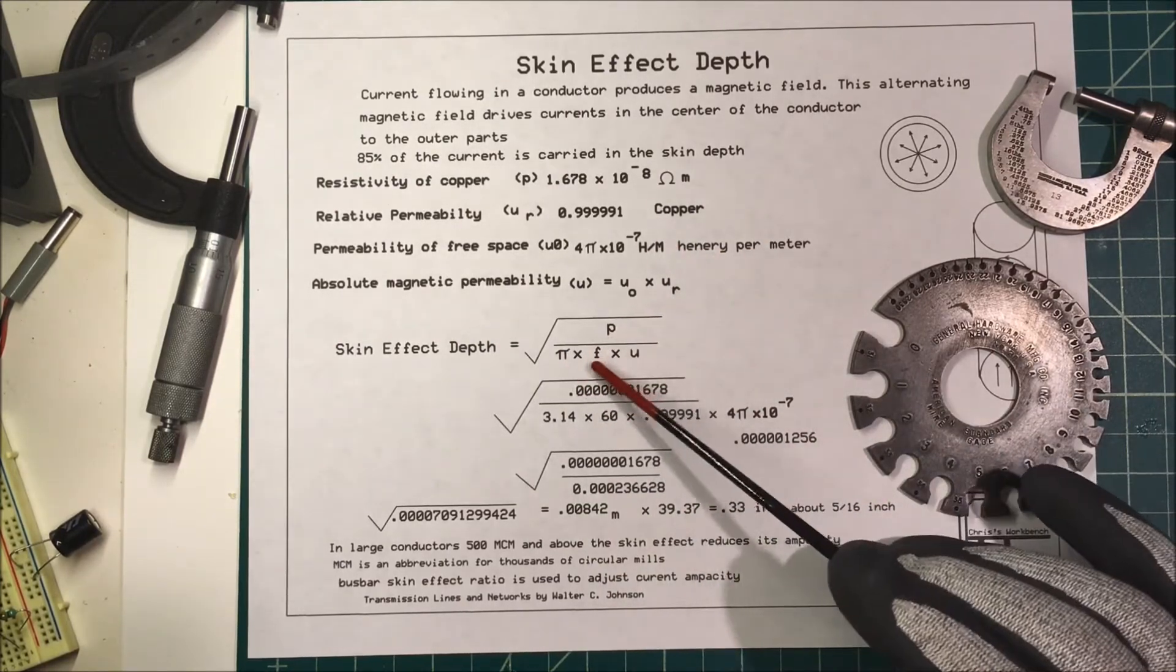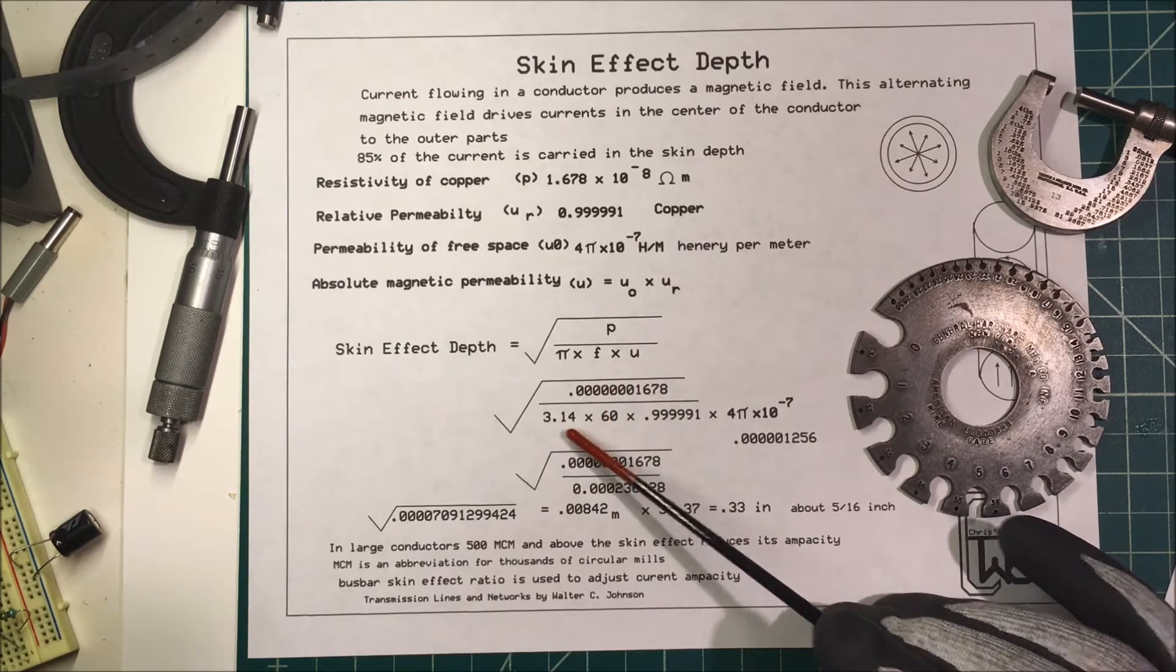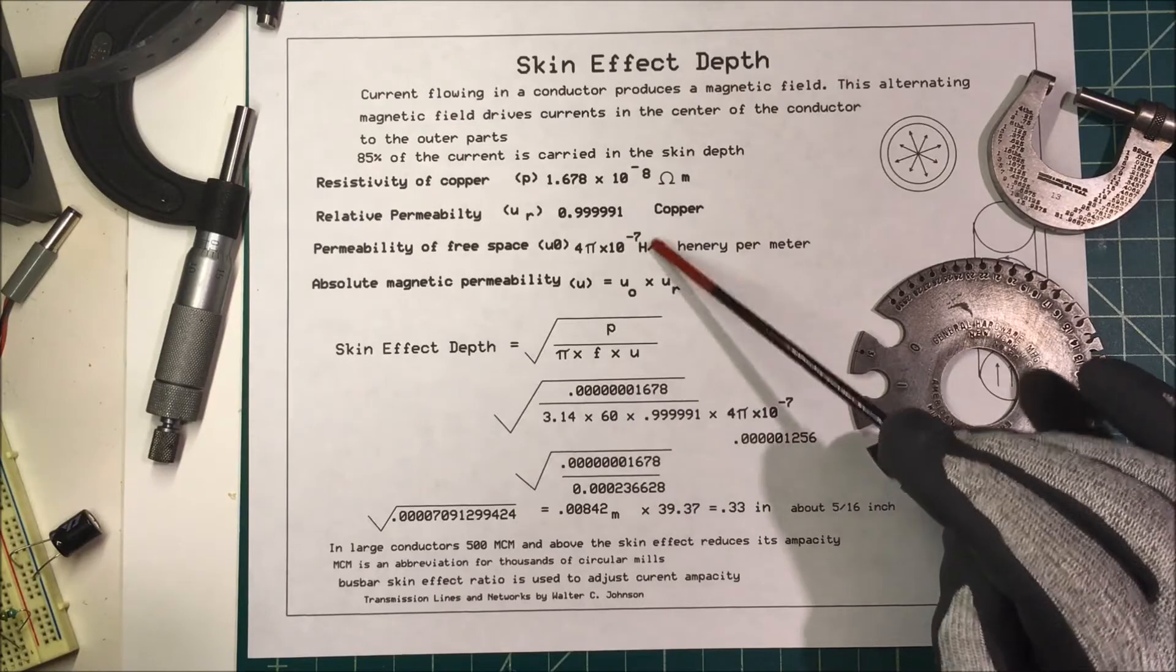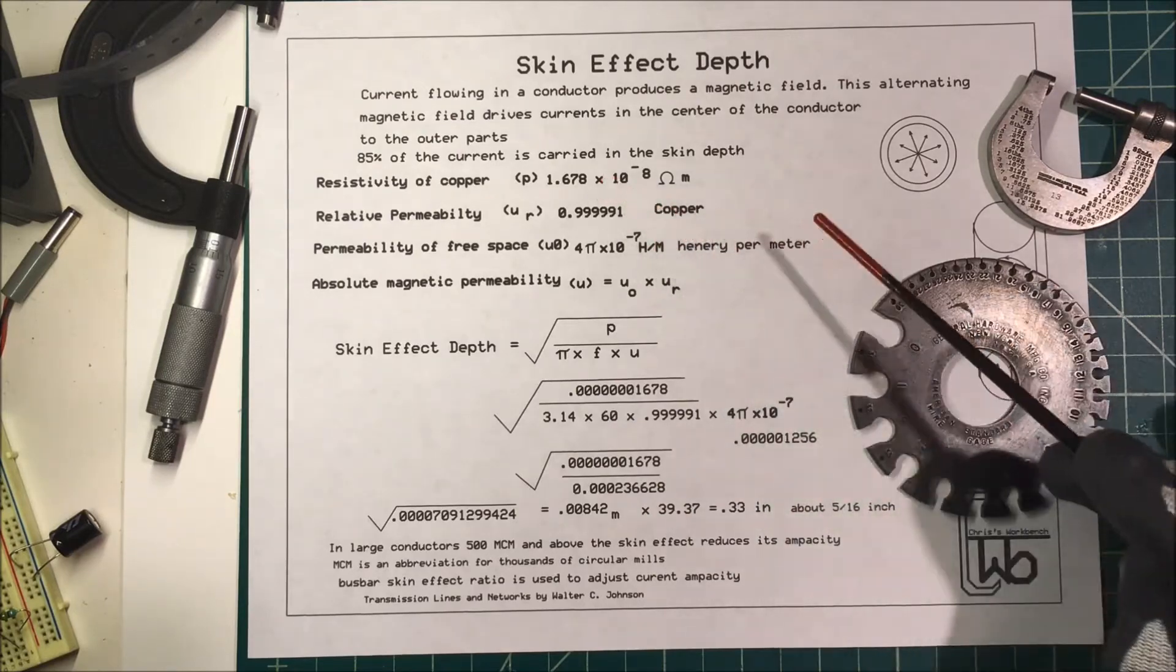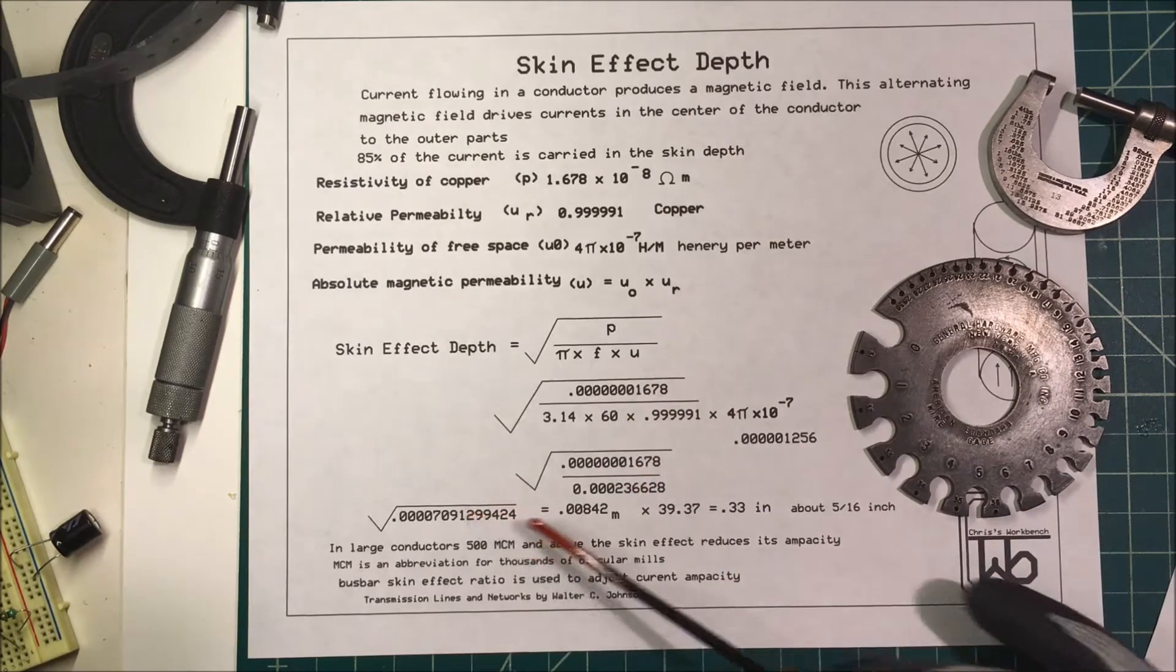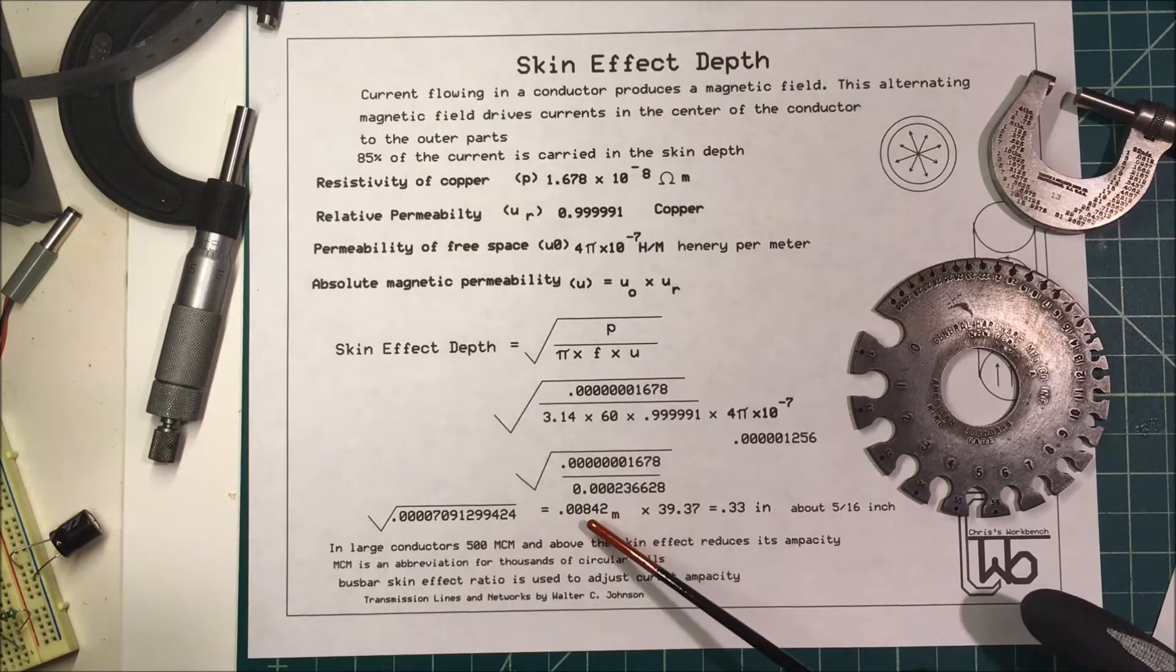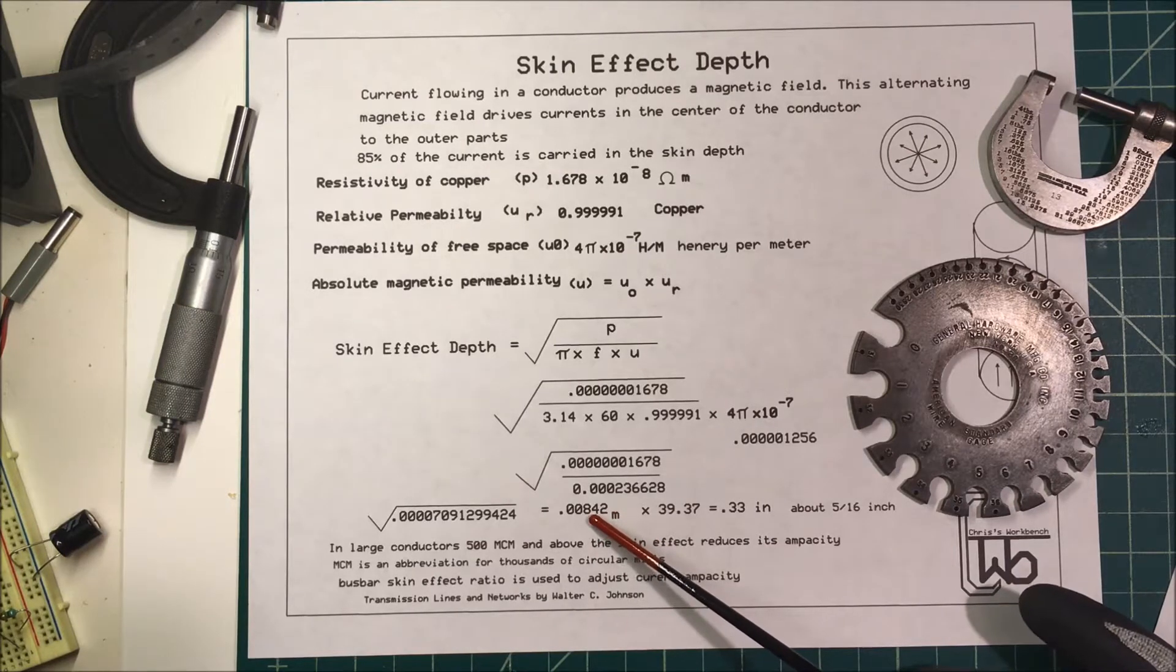In this formula we're going to use 60 hertz. We take π times 60 and multiply it by these two together and divide that into this number up here. Then we take the square root of that and it comes out to 0.00842 meters, that's 8 millimeters.